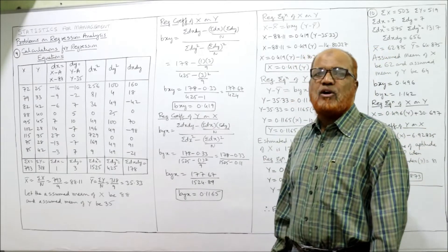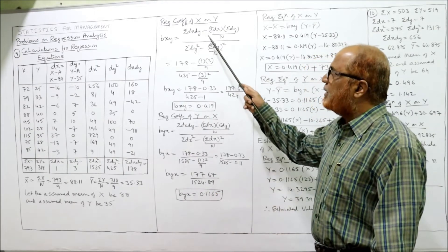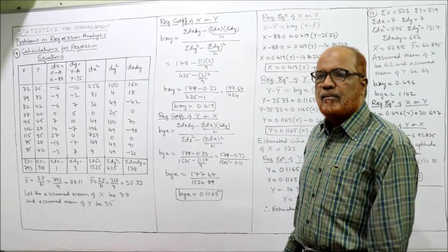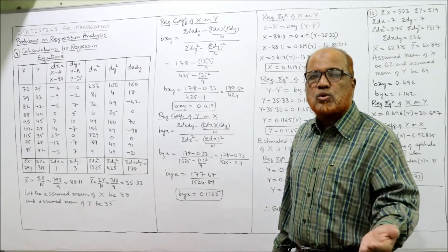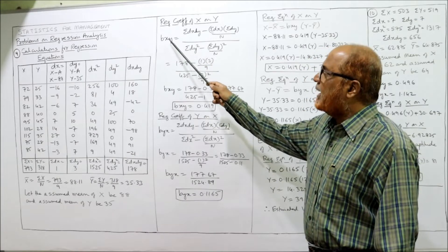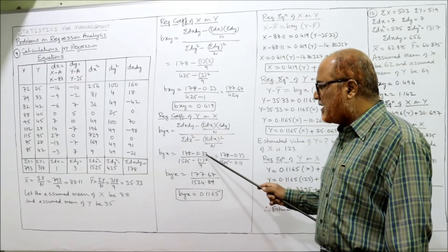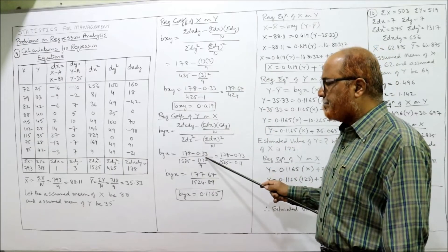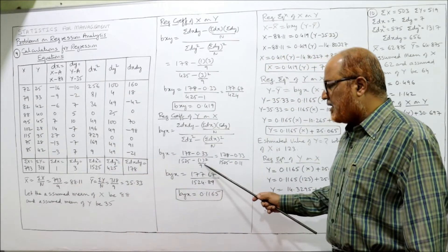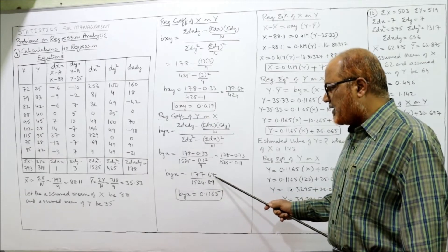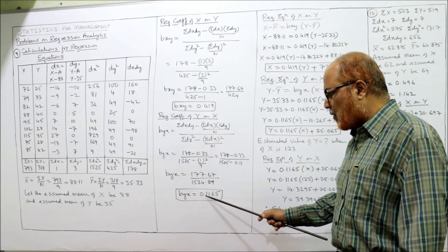The second regression coefficient byx: the numerator remains the same as bxy — Σdx·dy − (Σdx × Σdy)/n — but the denominator changes to Σdx² − (Σdx)²/n. So: 178 − 0.33 in numerator; denominator = 1525 − (1²)/9 = 1525 − 0.11. This gives 177.67 ÷ 1524.89, and ultimately byx = 0.1165.